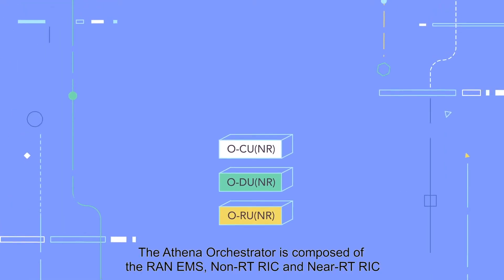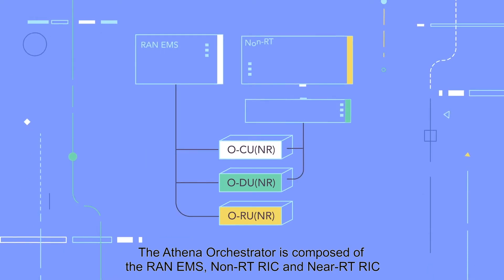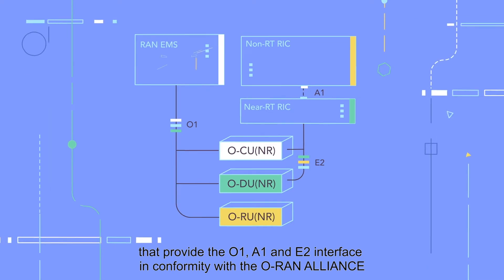The Athena Orchestrator is composed of the RAN EMS, non-real-time RIC and near-real-time RIC that provide the O1, A1 and E2 interface in conformity with the ORAN Alliance.